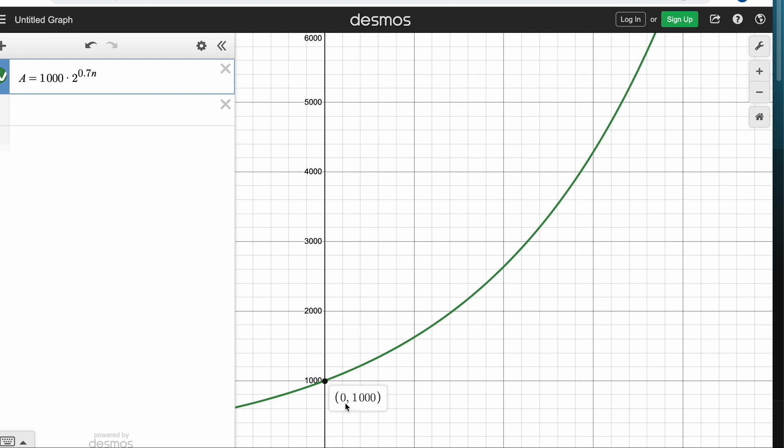We've got our function there and we can see it's growing. When n is zero, the number of weeks that have elapsed since the insects have started affecting the area, there's a thousand hectares that have been affected and then we can see that the value is growing.